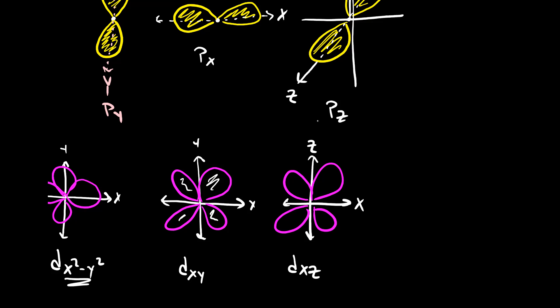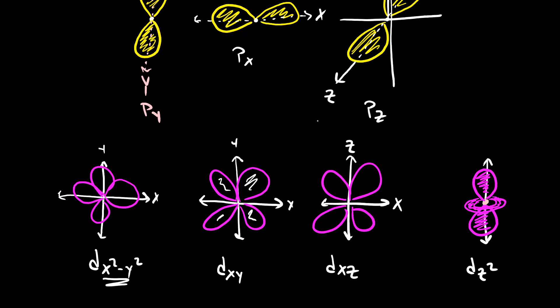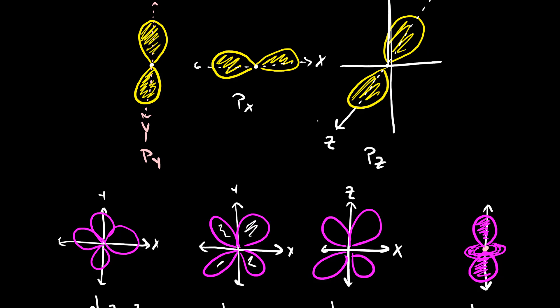Finally, the last D orbital is called the dz². If this is our nucleus, the dz² orbital looks like a P orbital going along the z-axis, but it also has a ring of electron density going around it, as well as space above and below. We're not going to look at the F orbitals because they're impossible to draw in two dimensions. In the next video, we'll take these ideas of what orbitals look like and understand how these shapes influence the potential energy an electron experiences in an S orbital versus a P orbital versus a D orbital.